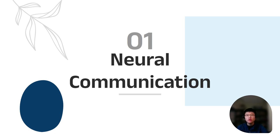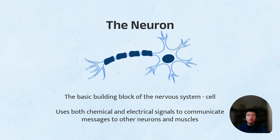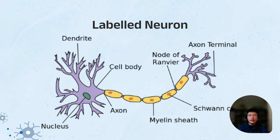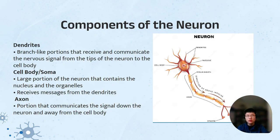First, we'll be talking about neural communication. Neurons are cells — how do they communicate messages throughout the body? The neuron is the basic building block of the nervous system. It uses both chemical and electrical signals to communicate messages to other neurons and muscles. Here is a labeled neuron. The dendrites are branch-like portions that receive and communicate the nervous signal from the tips of the neuron to the cell body.